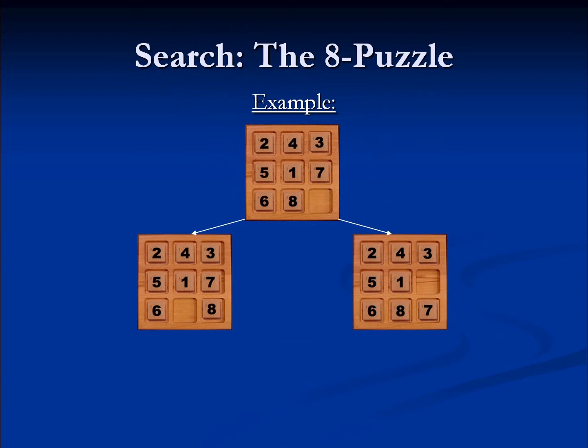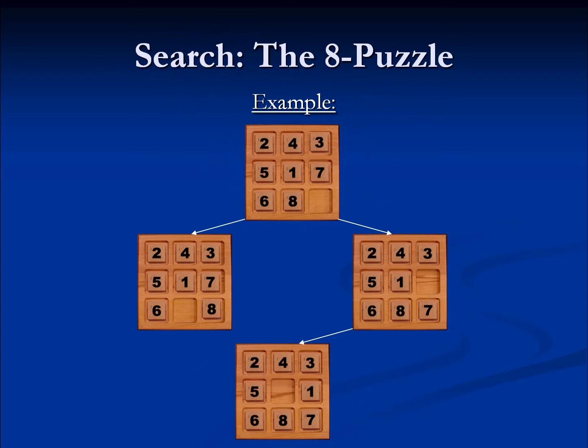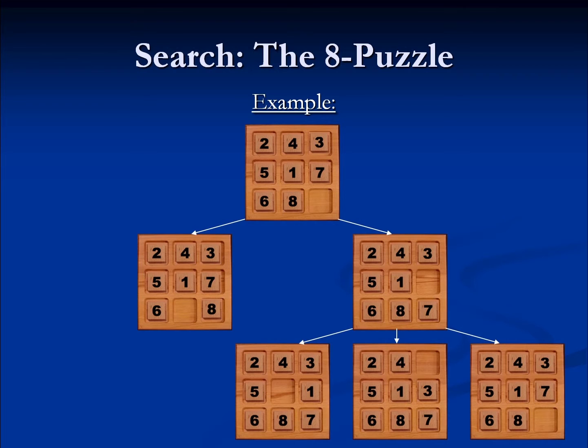If we choose to move the seven down, we then have three options from there: we could move the one over, we could move the three down, or we could move the seven up, and so on and so forth. This is how a search unfolds in a tree formation.